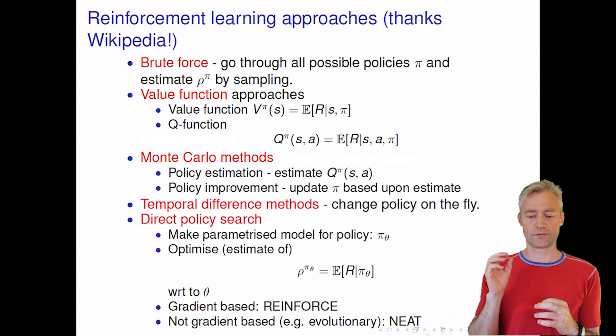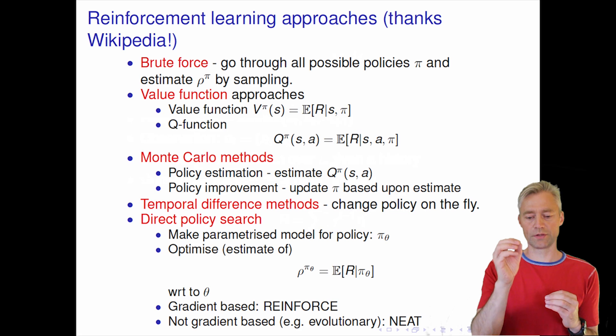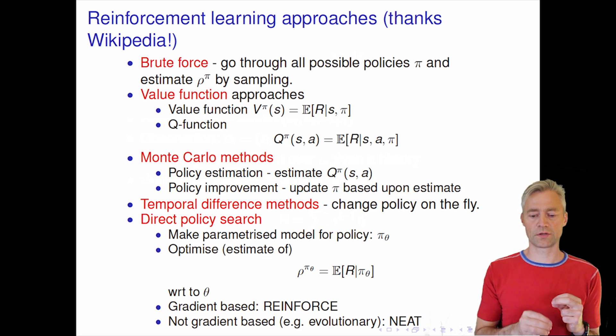You can think about this as a neural network that implements a conditional probability of the possible actions. So like a softmax probability if this is a discrete set of actions given the state as an input or the history of states.